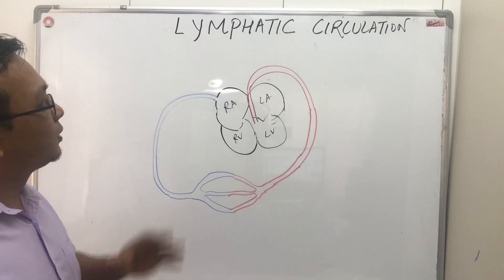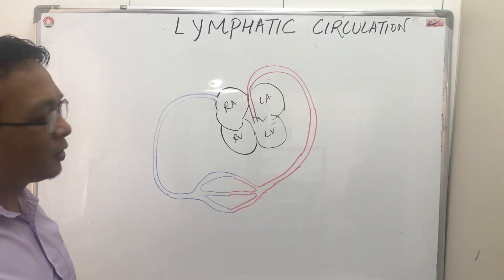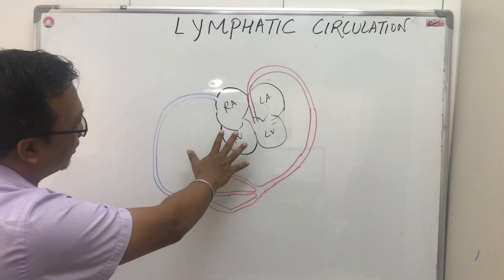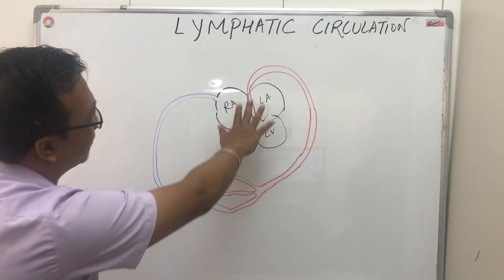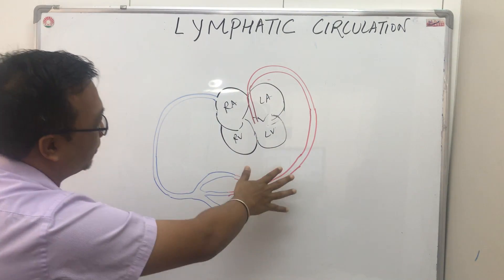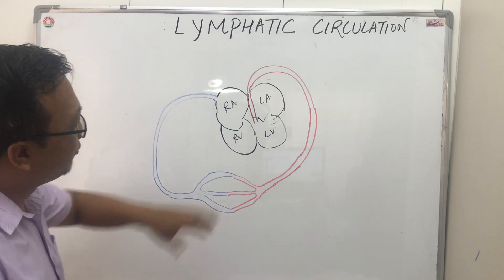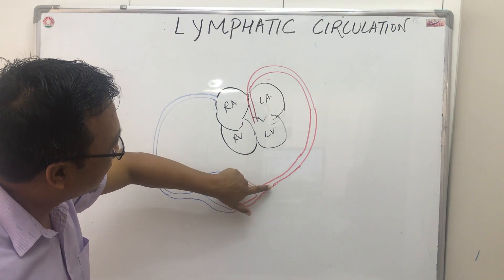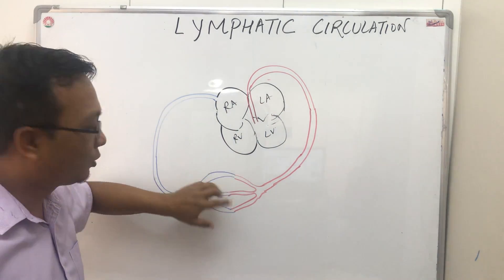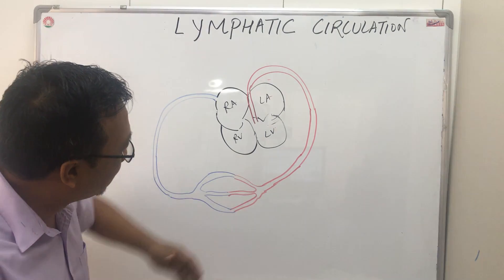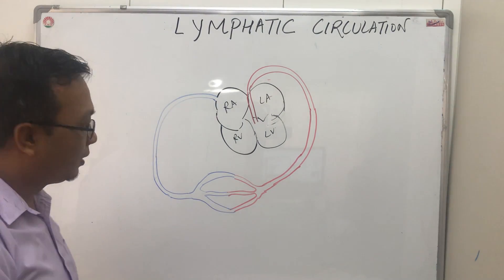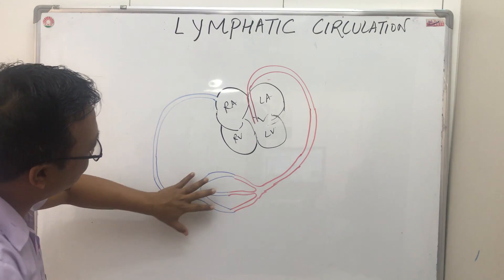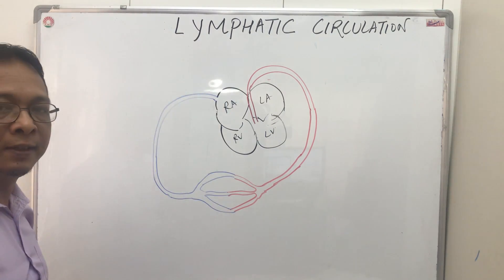Today we are going to discuss lymphatic circulation. In this diagram you can see the right heart and the left heart. From the left heart, blood is coming out from the left ventricle, and then the arteries are divided into small capillaries. This blue is the venous blood, and it is draining into the right atrium.